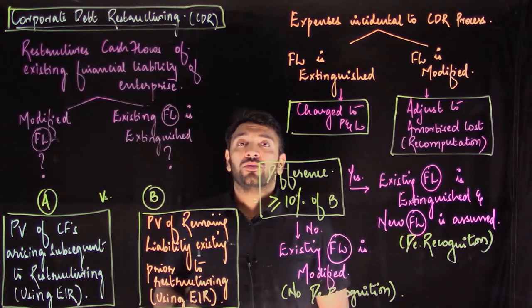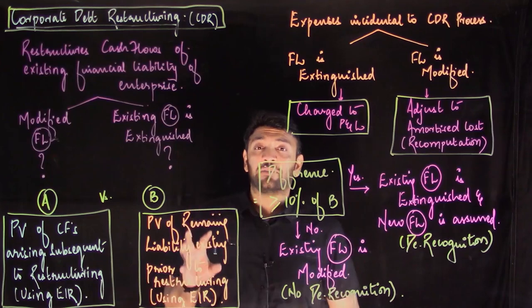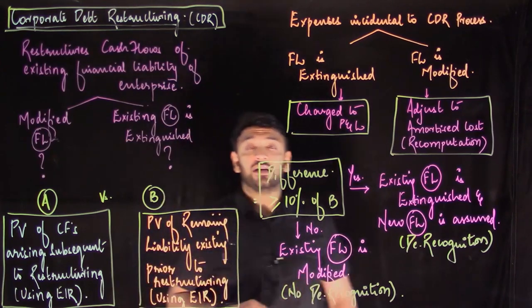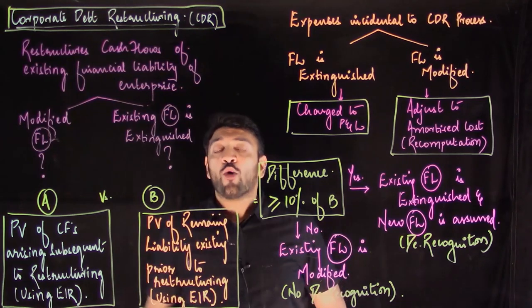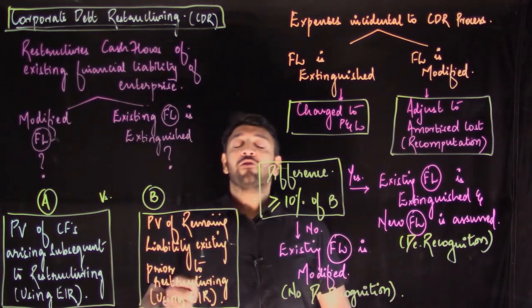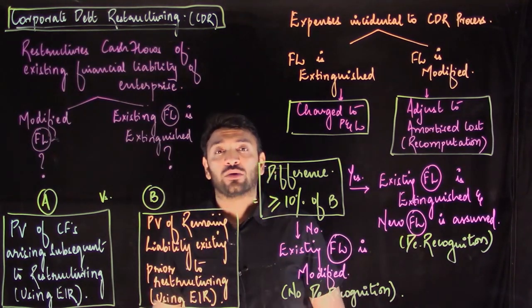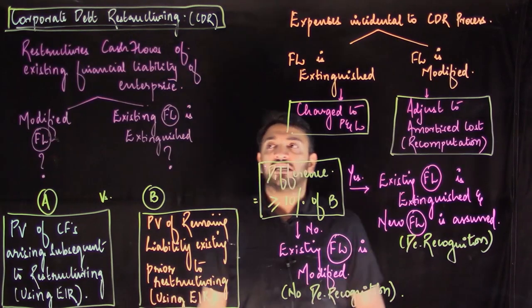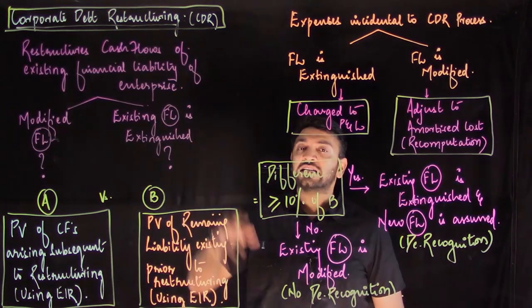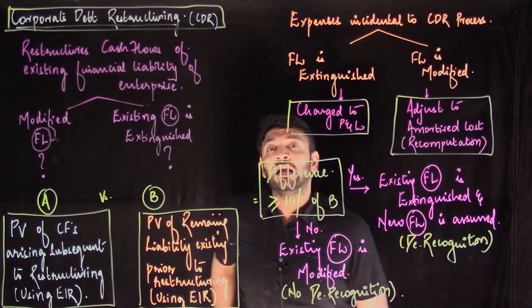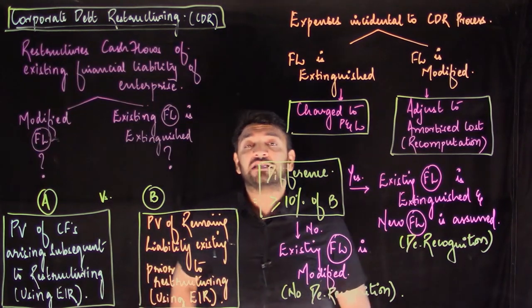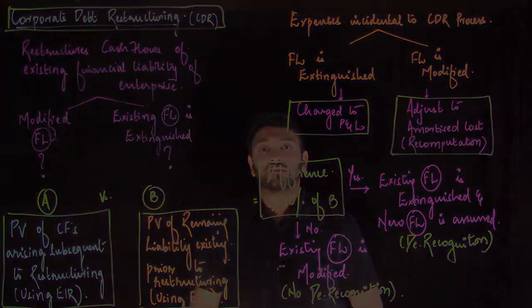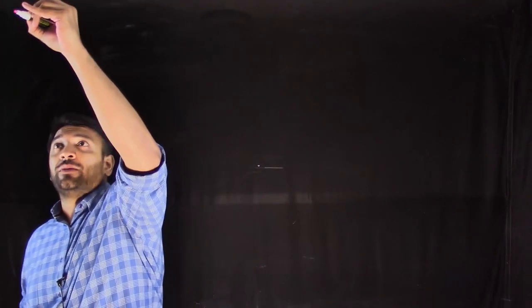These are the two significant accounting treatments that arise whenever we have expenditure incurred in a CDR process. This ends our concept regarding CDR recognition and de-recognition of financial assets and liabilities. The CDR process is very practical in today's world — the majority of situations have evidenced a CDR process with bankers.